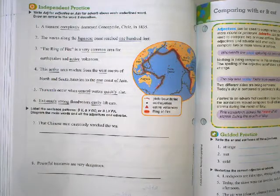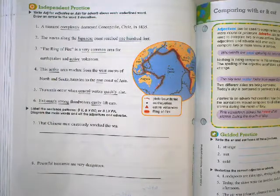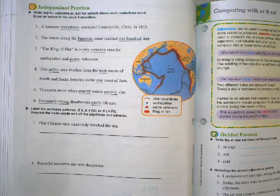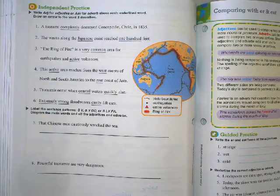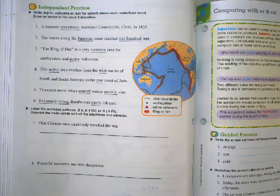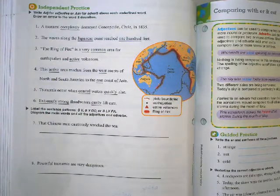All right, so with the independent practice, it's the same thing as before. It says write ADJ for adjective or ADV for adverb above each underlined word, then draw an arrow to the word that it describes.